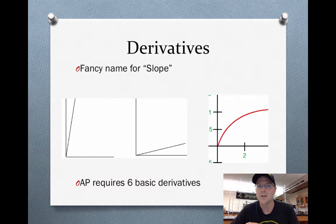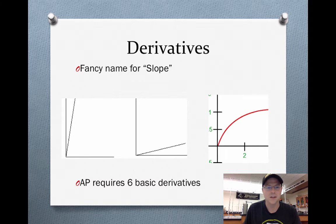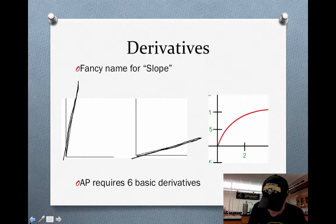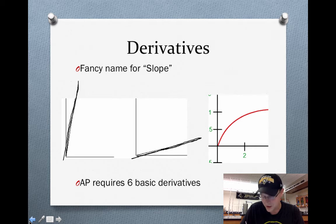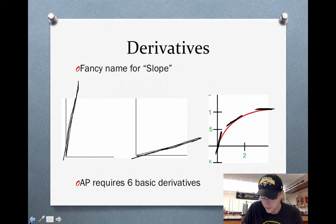Derivatives sound like a very terrifying word, but really it's just a fancy name for slope. When we make graphs in physics, we can have steep slopes, shallow slopes, or curved slopes. When we take the derivative of a function, what we're doing is taking the slope of that line. On a curved graph, if I take a tiny slope at the beginning it's very steep, then it starts to level off, and at the top there's no slope at all — so I get three different derivatives of that same function.